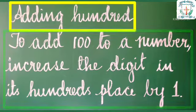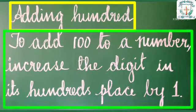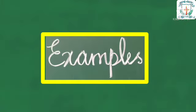Adding 100: To add 100 to a number, increase the digit in its hundreds place by 1. Examples: